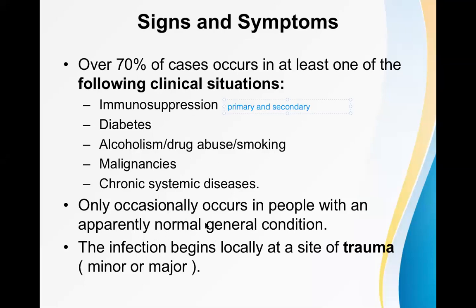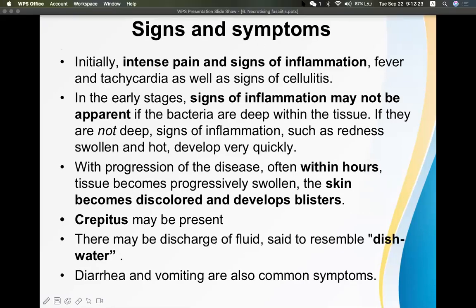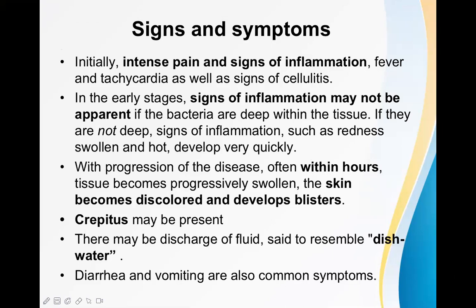Only occasionally does necrotizing fasciitis occur in people with an apparently normal general condition. Usually there are risk factors such as immunodeficiency. The infection begins locally at a site of trauma — minor or major. In the beginning there is intense pain and signs of inflammation in that local area: redness, swelling, heat, fever, tachycardia, and signs of cellulitis.